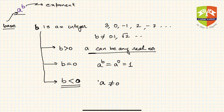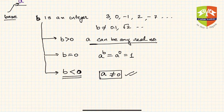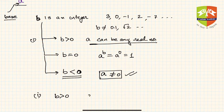Please remember: if b is greater than 0, a can be any real number; if b is less than 0, a cannot be 0. In Case 1 where b > 0, a^b is nothing but a multiplied by itself b times.